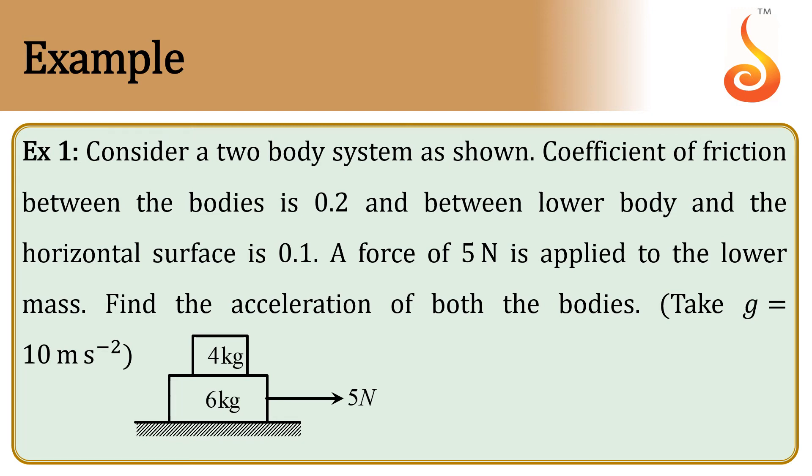Example 1: Consider a two body system as shown. Coefficient of friction between the bodies is 0.2 and between the lower body and the horizontal surface is 0.1. A force of 5 Newton is applied to the lower mass. Find the acceleration of both the bodies.